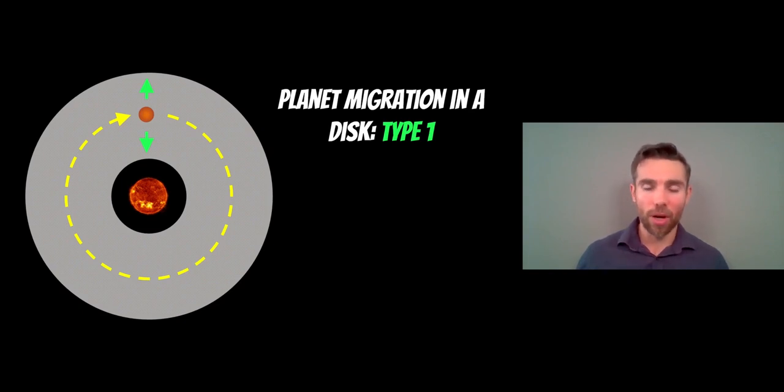Welcome to this video on planetary migration. More specifically, in this video we're going to look at planetary migration in a disk. These disks are orbiting stars and there's a few different types of migration in a disk for planets, and we're going to look at type 1 in this particular video.